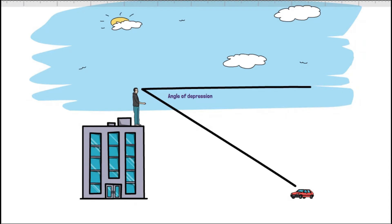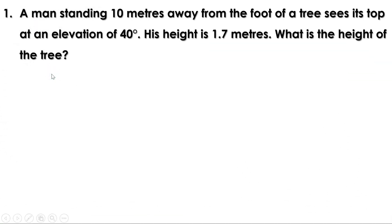Now let us do some problems. First problem: a man standing 10 meters away from the foot of a tree sees its top at an elevation of 40 degrees. His height is 1.7 meters. What is the height of the tree? There is a tree and a man. His height is 1.7 meters. When the height of a person is given, we can show him using a line. And if the height is not given, he is a point.